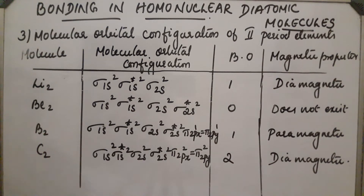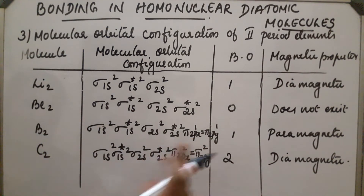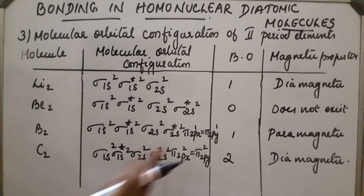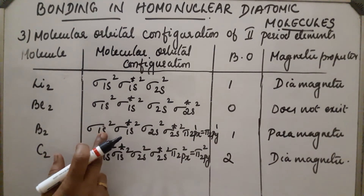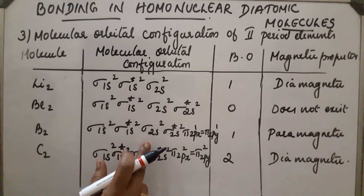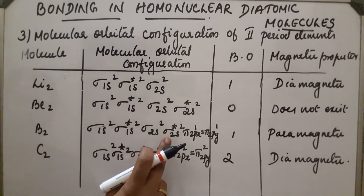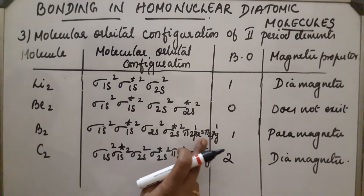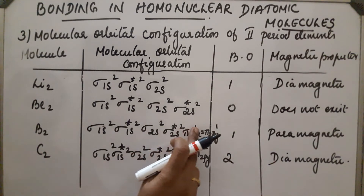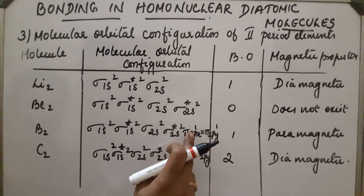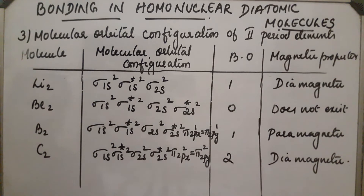Next is B₂. The energy order here has sigma 2pz at higher energy than pi 2px and pi 2py. The configuration is sigma 1s², sigma star 1s², sigma 2s², sigma star 2s², and then pi 2px and pi 2py at the same energy, with one electron each. It contains unpaired electrons, so it is paramagnetic, and the bond order is 1.